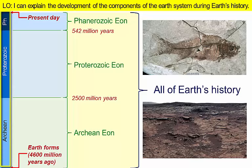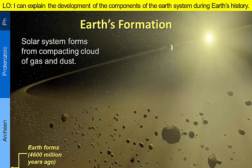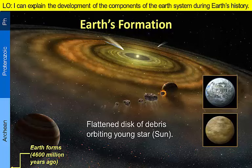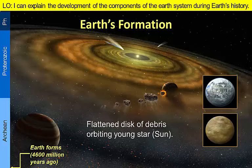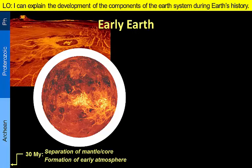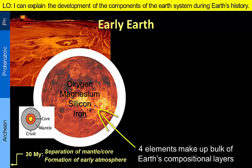Earth formed about 4.6 billion years ago as our solar system was forming from a collapsing cloud of dust and gas. The remaining materials organized into a flattened disk of rotating debris. Gravity from larger clumps pulled in adjacent dust and rocks to form planetesimals, which eventually collided together to form the early Earth. Hot, young Earth was characterized by widespread melting and rapid separation of the internal compositional layers of mantle and core within the first 30 million years of the planet's life.